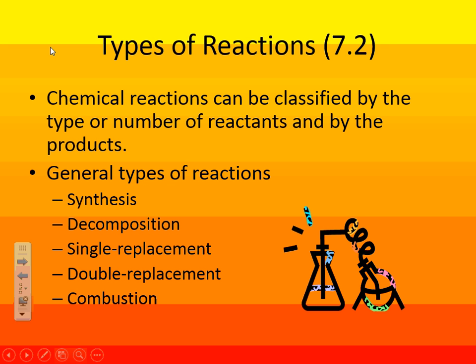We have synthesis, decomposition, single replacement, double replacement, and combustion. So again, the five types of chemical reactions: synthesis, decomposition, single replacement, double replacement, and combustion.